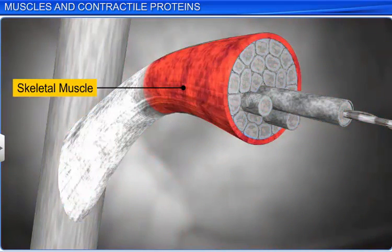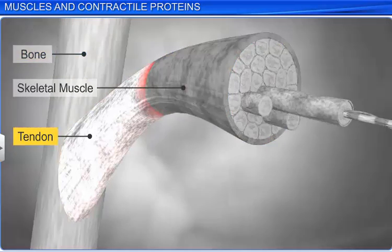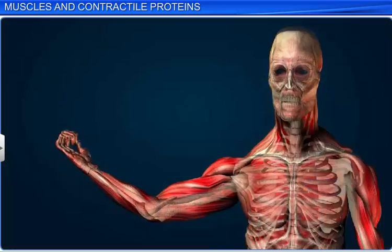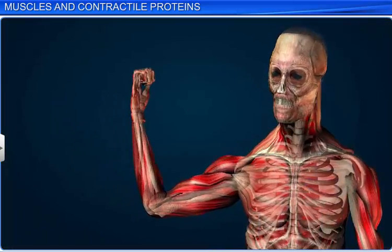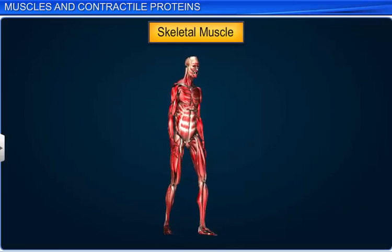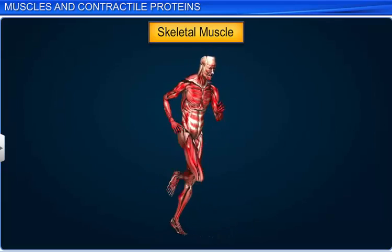Skeletal muscle tissues are attached to the bones of the body by collagen fibers called tendons. These muscles are striated or striped, and are also referred to as voluntary muscles, as they are under the control of the nervous system. Skeletal muscles help in locomotion and different body postures.